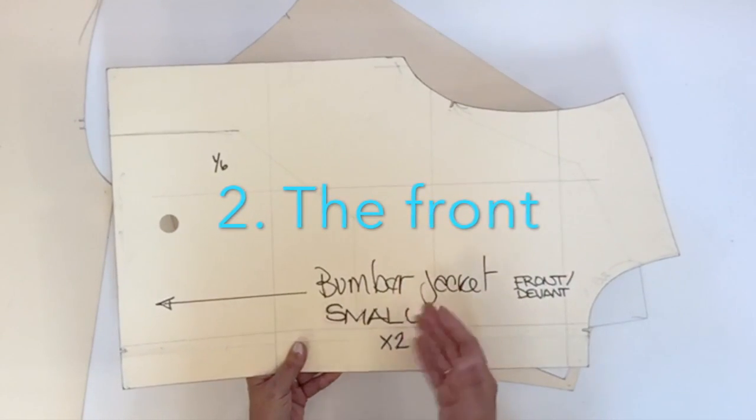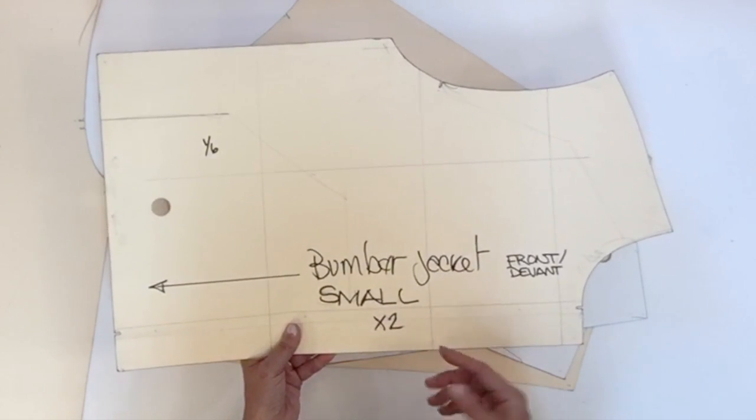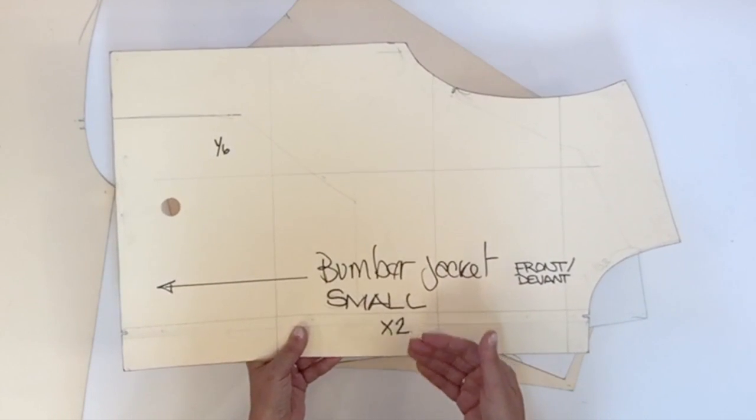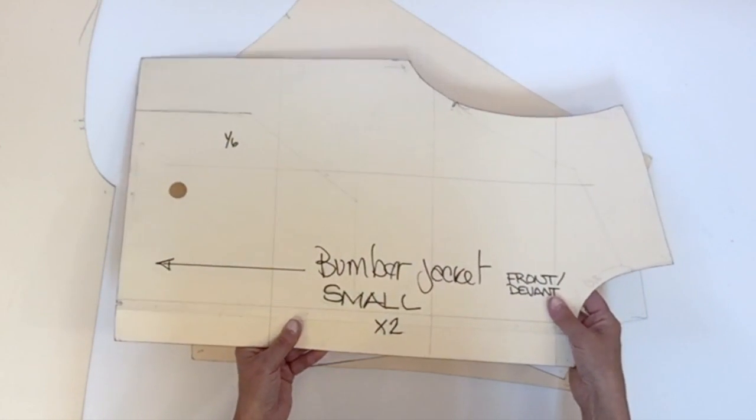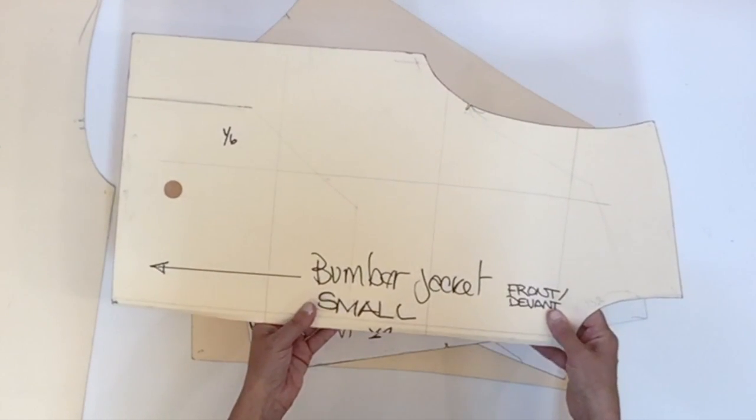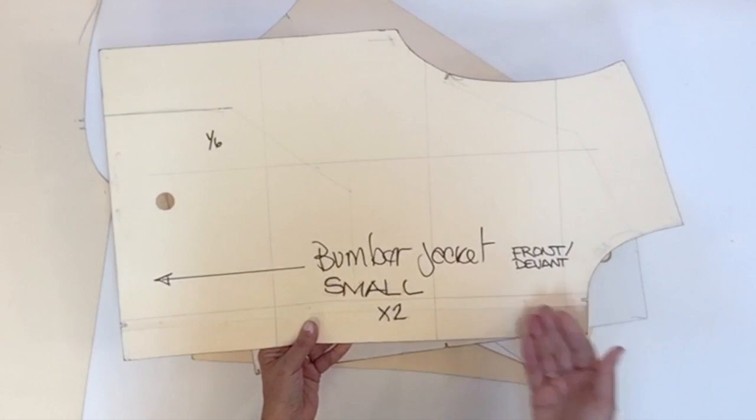The next piece is the front. On this block I did an overlap as you can see, but you don't need to use the overlap all the time depending on your style. For example, if you have a zipper front you might remove the overlap. If you have buttons, keep it.